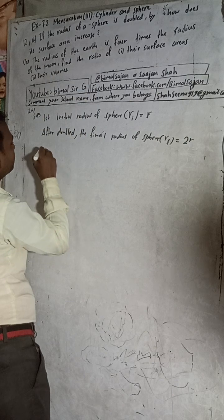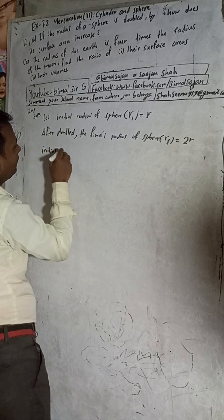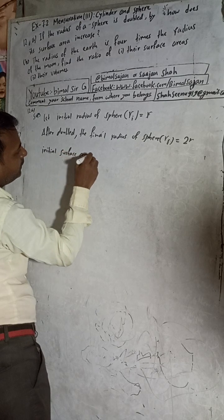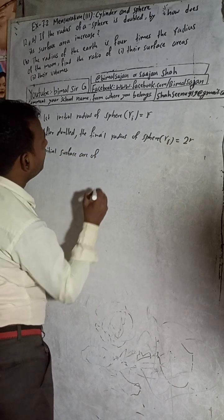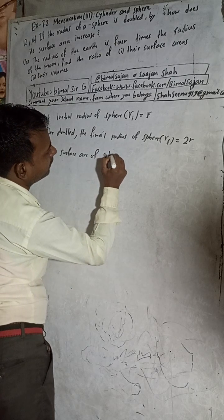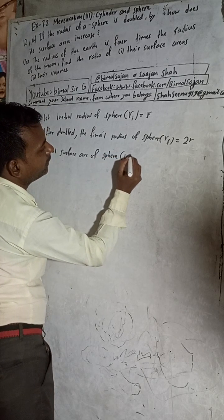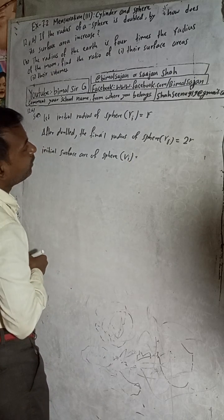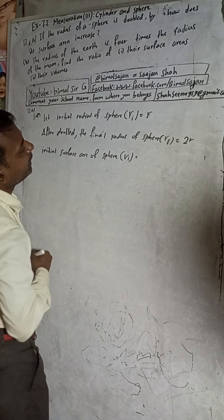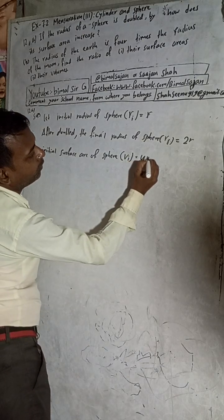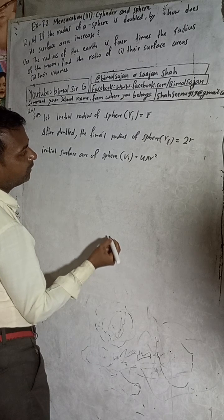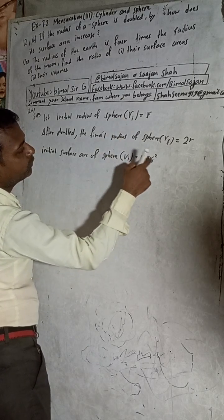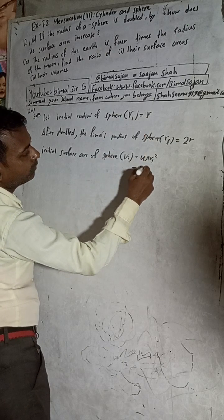Initial surface area of the sphere: the surface area formula for a sphere is 4πR². So the initial surface area, using initial radius R, is 4πR².